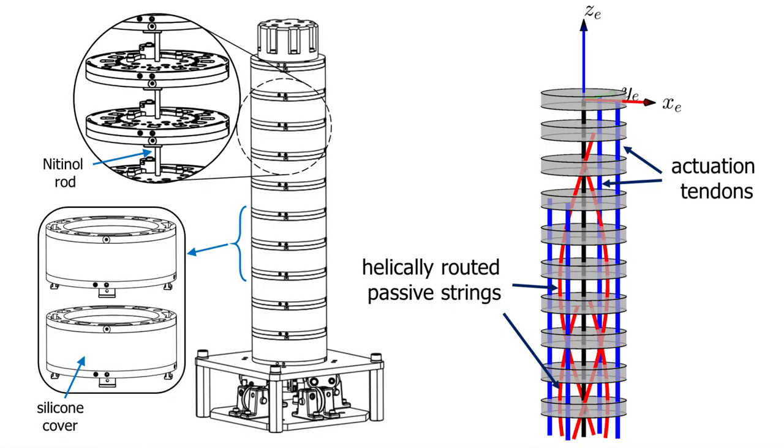We also validate the approach in a simulation study for a robot subject to torsional deflections and designed with helical string routing, showing that our approach can capture general deflection shapes and string routing designs.